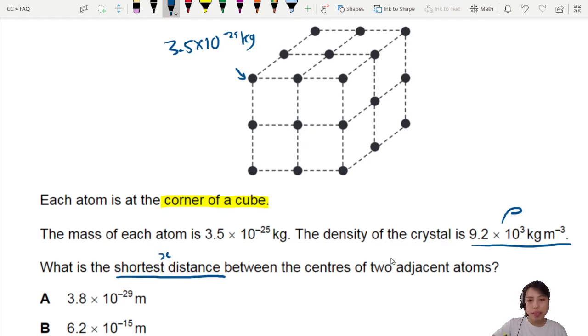What they're asking for is x, which is from here to here. Between two atoms, what's the shortest distance? So you may think of density, got mass. Maybe we can use this. Density equals mass over volume for the whole crystal. Volume is x cube, or length cube.